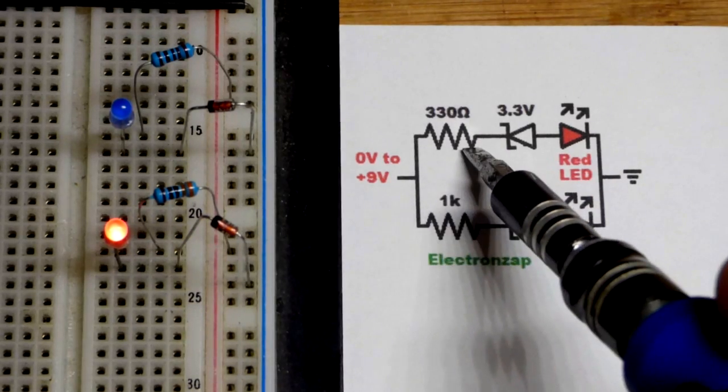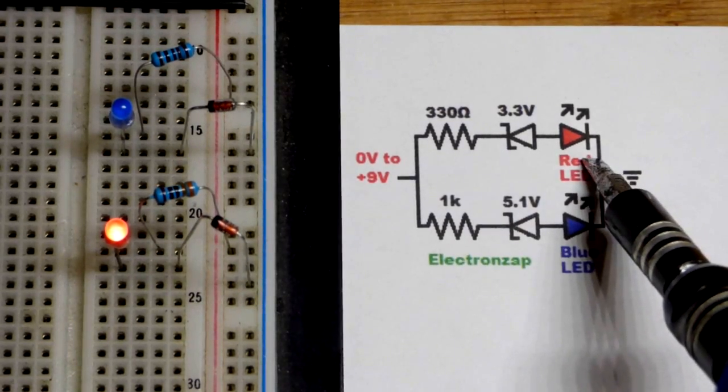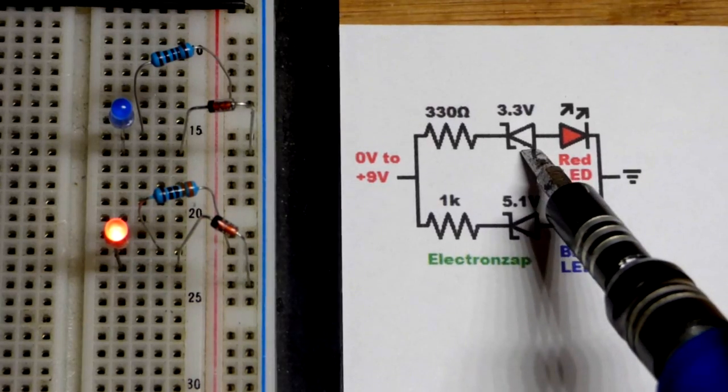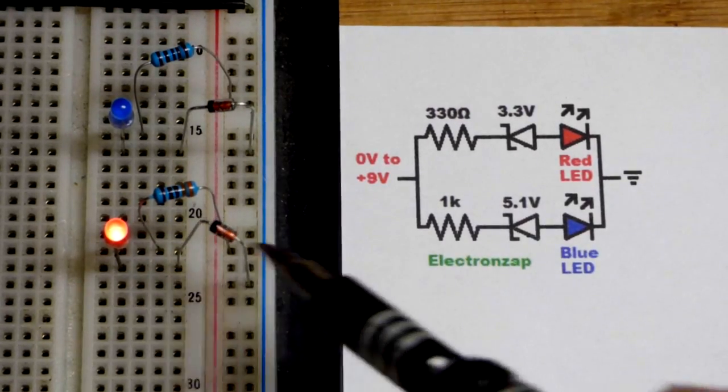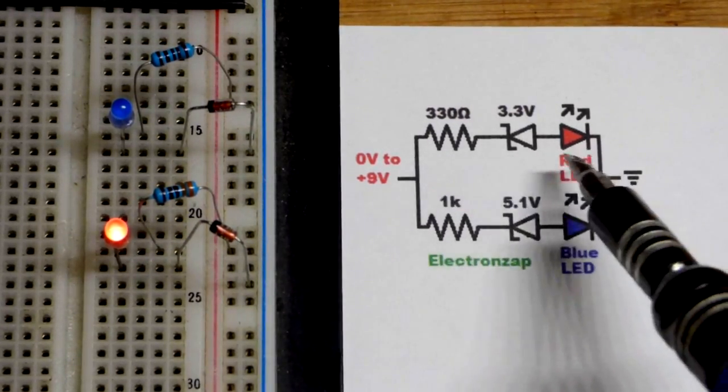We have a 330 ohm resistor. They don't get as bright at higher current, so we can use a lower value resistor. We have a reverse bias Zener diode. So again, they're in series, order does not matter.